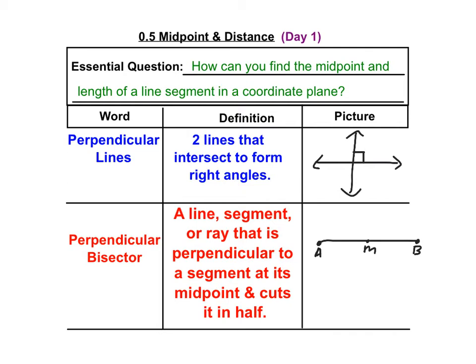Now that I've found the midpoint, to make a perpendicular bisector, we can have a line, a segment, or a ray that goes through that midpoint. For the first picture, I'm going to go ahead and draw a ray. As long as it goes through that midpoint and it makes a 90 degree angle with the segment, that is what makes it a perpendicular bisector.